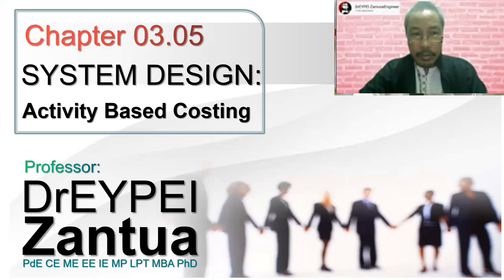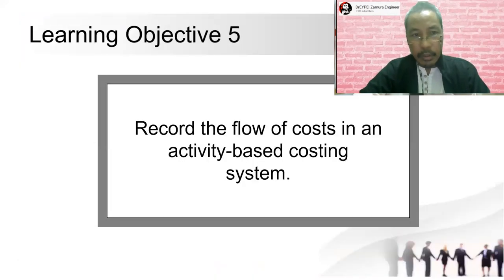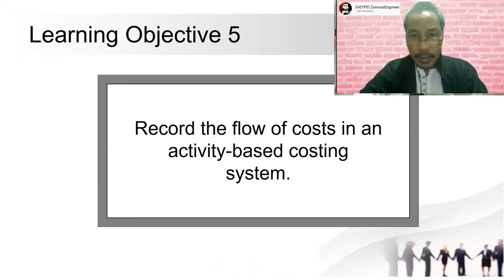In this video, let us continue the discussion about system design, activity-based costing. We are currently on module 3.05. In this module, we have a learning goal to record the flow of cost in an activity-based costing system. Let us take a look at that activity in this module.